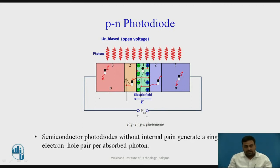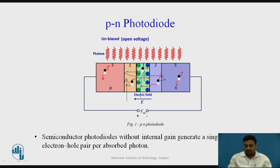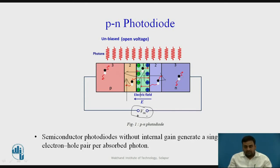Here, we have not applied any bias. Usually, the PN photodiodes are operated under reverse bias. In the first region, after the absorption of the photons, electron hole pairs are generated. The generated electrons will drift towards the N region, while the holes will drift towards the P region, creating a charge separation. So we get an open circuit voltage across this photodiode. The electrons and holes in the diffusion region move randomly, unless they come under the influence of the built-in electric field of the PN junction photodiode.